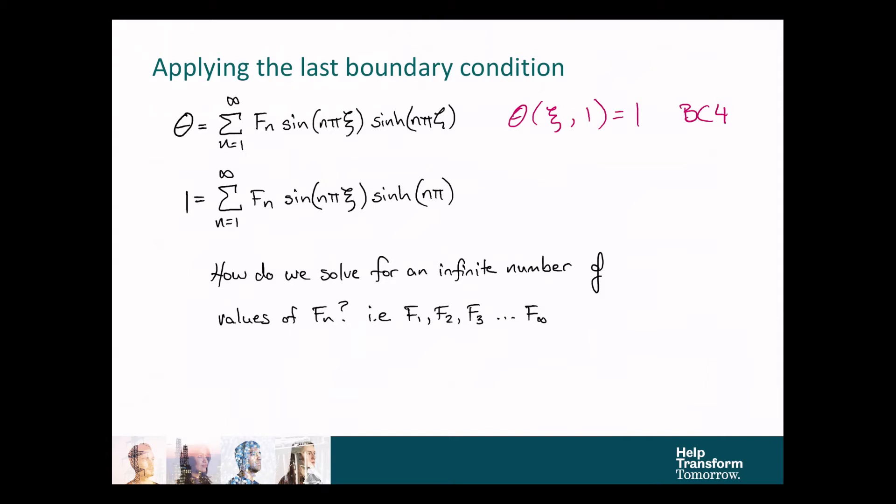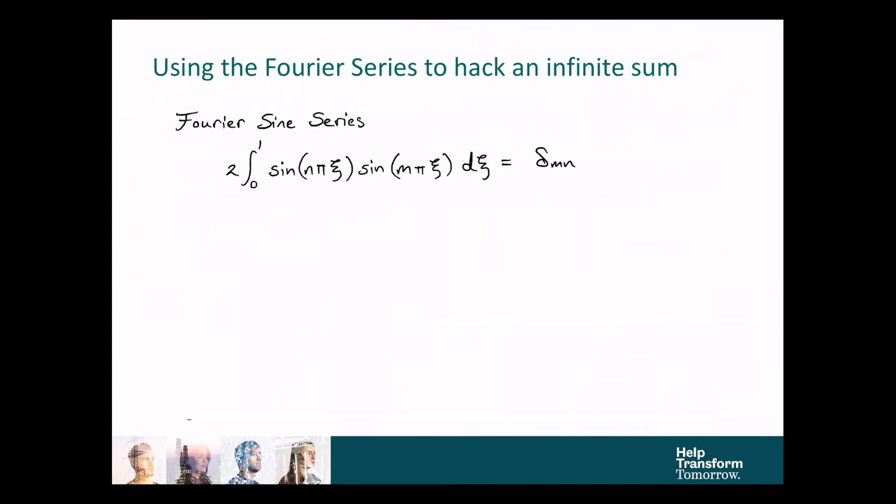And the trick we're going to use is the orthogonality of the Fourier sine series. So, let's take a really quick tangent here. The Fourier sine series basically states that when you multiply one sine function by another sine function with indexed arguments, the only time that integral is going to be non-zero is when m is equal to n. For every other instance, because the Fourier sine series is orthogonal, that basically means that this integral goes to zero.